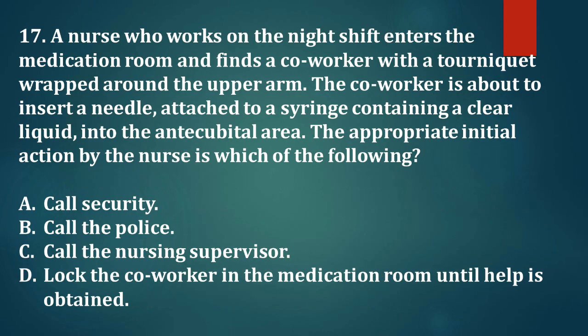Question 17. A nurse who works on the night shift enters the medication room and finds a co-worker with a tourniquet wrapped around the upper arm. The co-worker is about to insert a needle, attached to a syringe containing a clear liquid, into the antecubital area. The appropriate initial action by the nurse is which of the following? A. Call security. B. Call the police. C. Call the nursing supervisor. D. Lock the co-worker in the medication room until help is obtained.